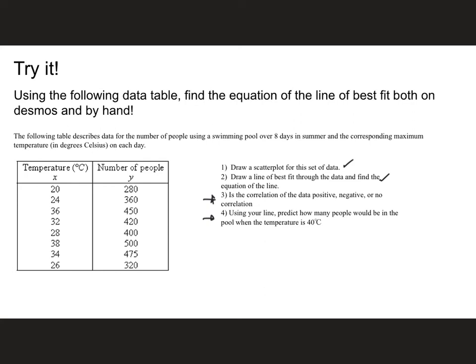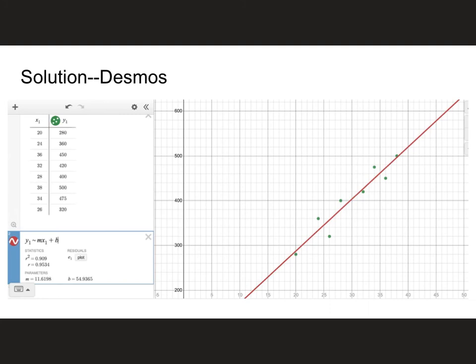I'm using Desmos here. This was the table of values up in the corner. I typed in my magic equation to come up with my answer, and here's my line of best fit with my equation. The actual equation for this line is y equals 11.619x plus 54.937. If you did this by hand, you should be pretty close to what Desmos is telling you. You should be in the neighborhood of this equation with these numbers. Doesn't have to be perfect.